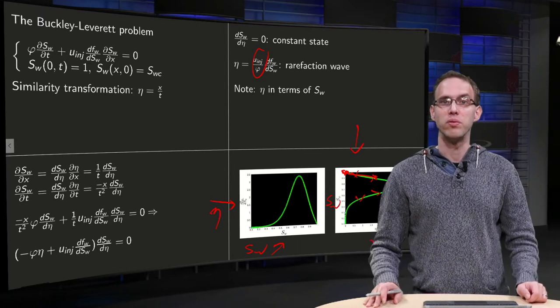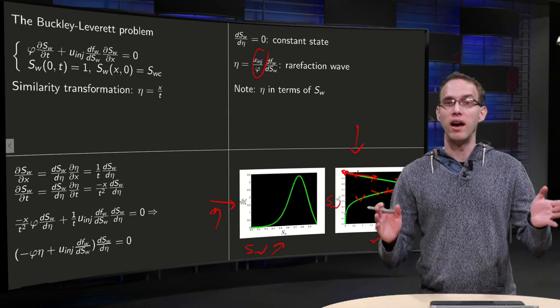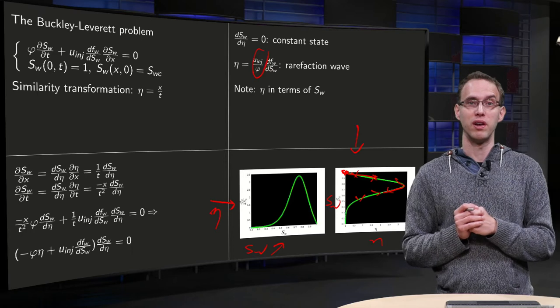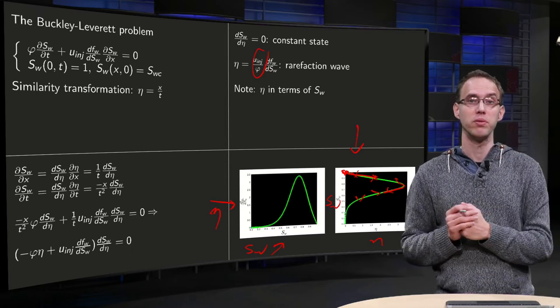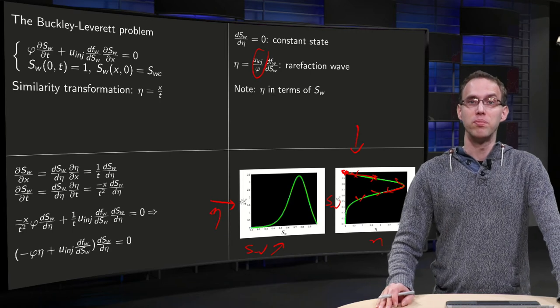So how is this possible? What should we do if we would continue? We would go back. So this is obviously not possible. At one value of η, you can have only one possible saturation. So we have a problem here.